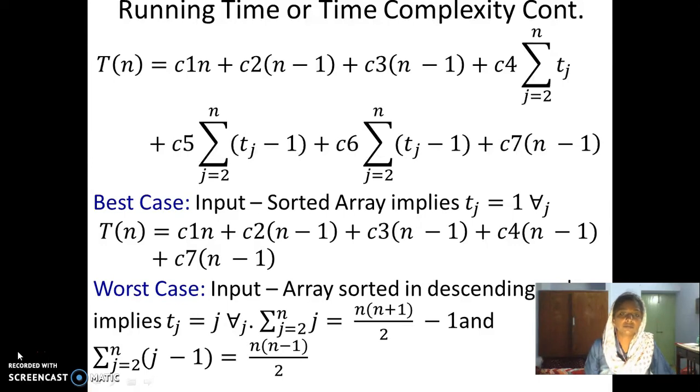We have the summation from j running from 2 to n with j. This we can expand like 2 plus 3 plus 4 up to n. We can use the formula which sums from 1 to n. If I have first n natural numbers, the summation will be n into n plus 1 divided by 2. Since we do not have the 1, the series now starts with 2.